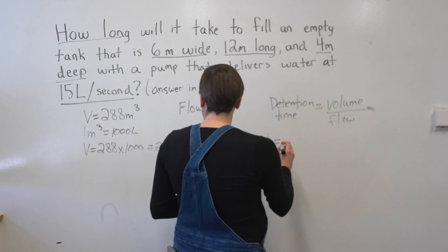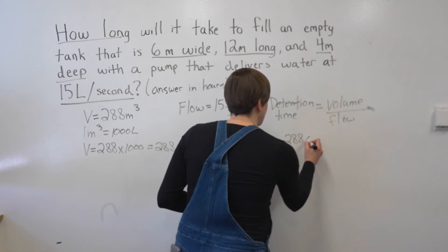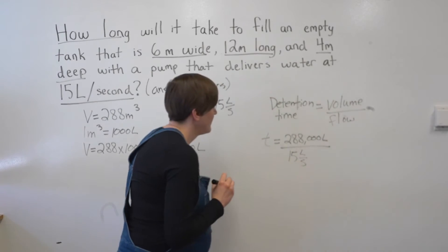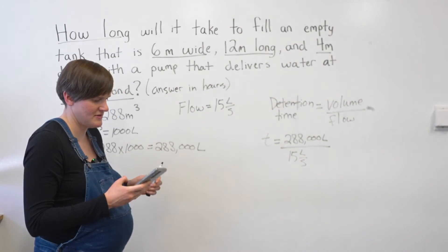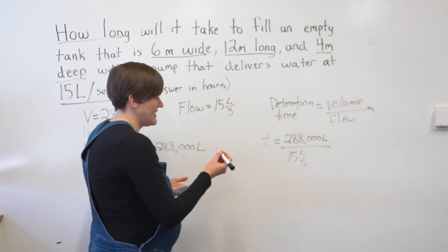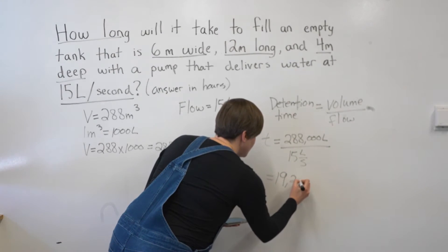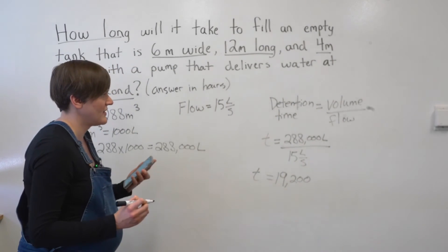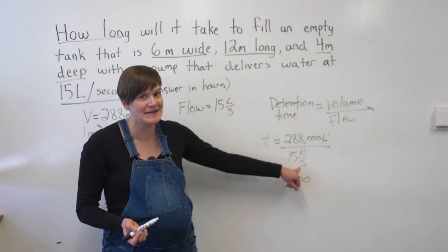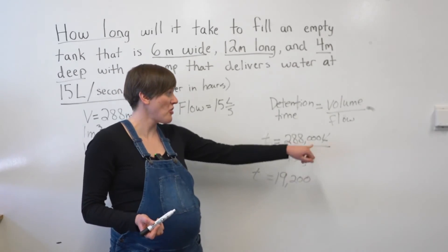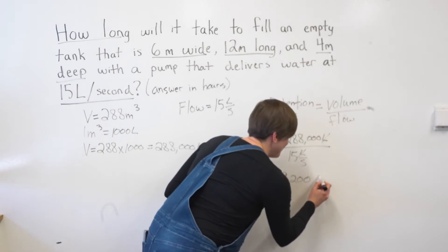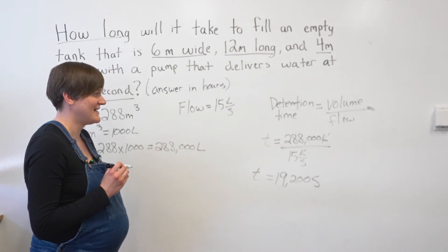So time equals my volume over my flow rate. On my calculator, I will go 288,000 divided by 15, and I get 19,200. For units, I have liters and liters, which cancel, and I'm left with seconds on the bottom of a fraction — and when that happens, the seconds come up. So my time is 19,200 seconds.